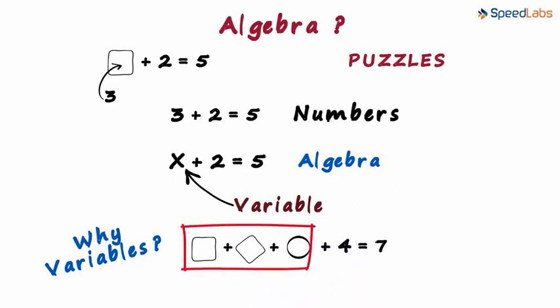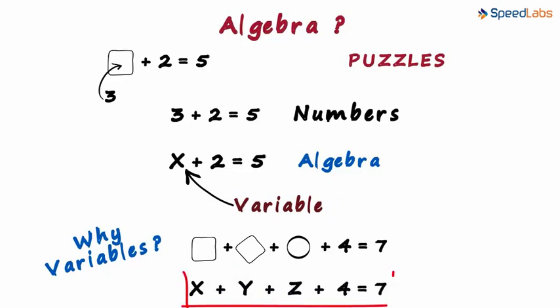You had to think of different shapes. Using variables, we can write it as x plus y plus z plus 4 equals 7. This was a little more convenient as compared to the previous case. But what's the real advantage of using variables?